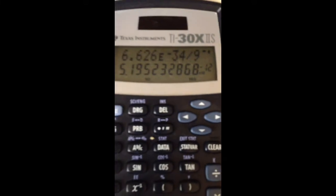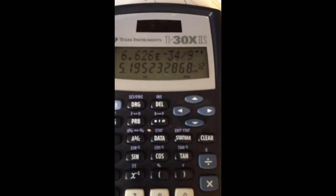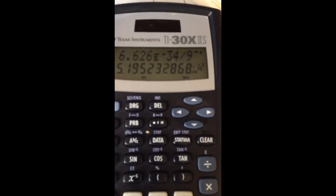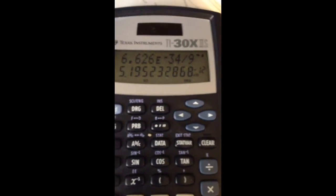Now I'm going to hit equal. And when I hit equal sign, I get, ta-da, the right answer. 5.19 something, something, something, something, times 10 to the negative 12.